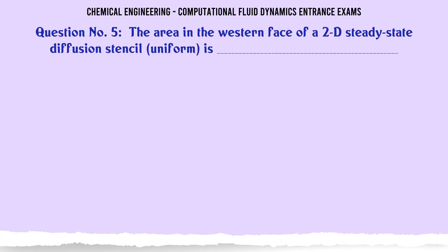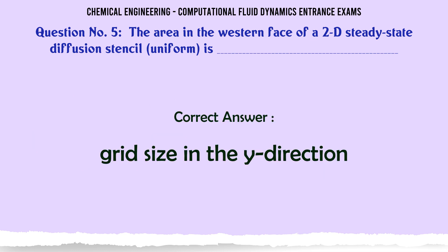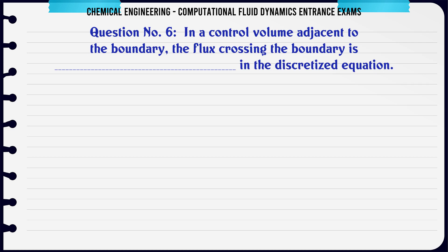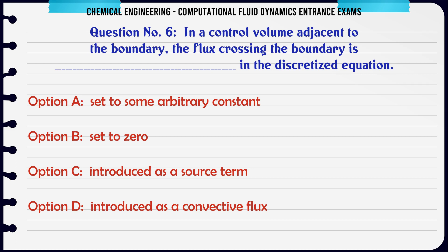The area in the western face of a 2D steady-state diffusion stencil (uniform) is: A. Grid size in the X direction. B. Grid size in the Y direction. C. Product of the grid sizes in the X and Y directions. D. Ratio of the grid sizes in the X and Y directions. The correct answer is B: Grid size in the Y direction.